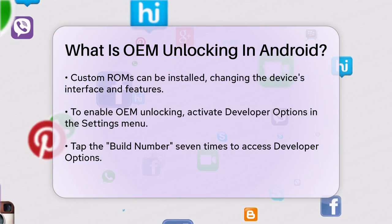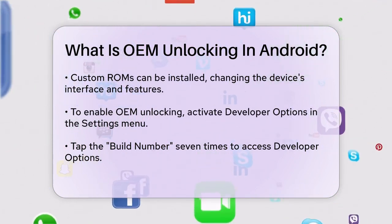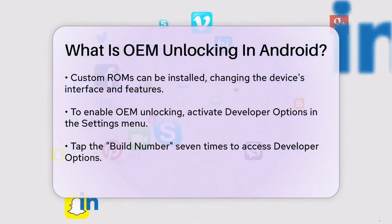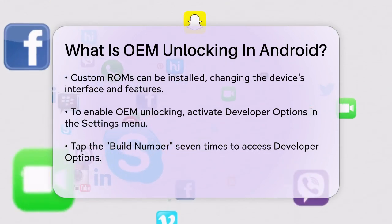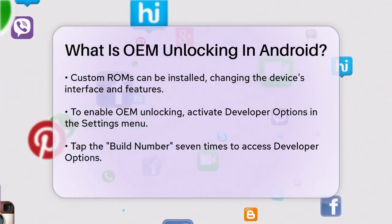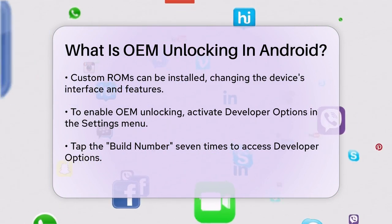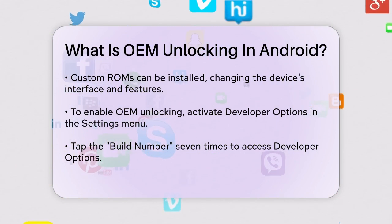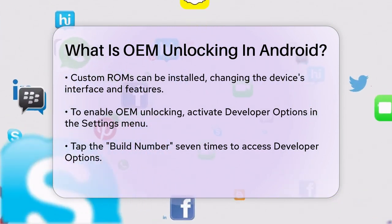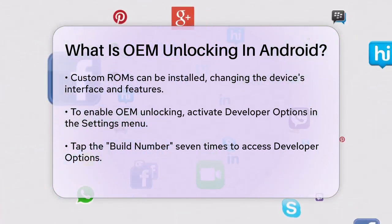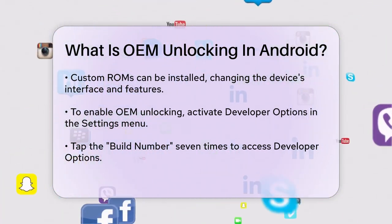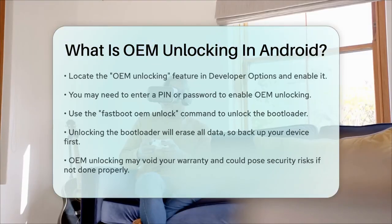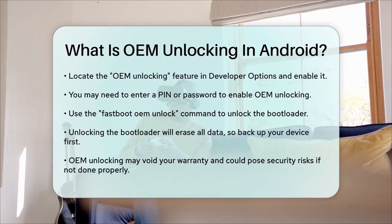To enable OEM Unlocking, you need to follow a few steps. First, you need to activate the developer options on your device. You do this by going to the Settings menu, navigating to About Phone or System, and then tapping the build number seven times. This will activate the developer options. Next, go to the developer options and find the OEM Unlocking feature. You might need to enter your PIN or password to enable it. Once enabled, you can use the FastBoot OEM Unlock command to officially unlock the bootloader.